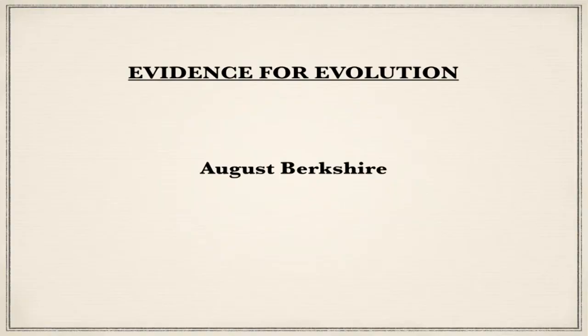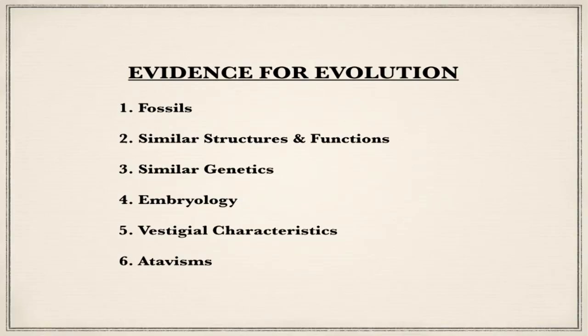My name is August Berkshire, and today I'm going to talk about the evidence for evolution. There are many things that support the theory of evolution. Today I'm going to talk about six of them — there are probably even more, but these six are easy to grasp. They are: fossils, similar structures and functions, similar genetics, embryology, vestigial characteristics, and atavisms.